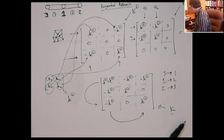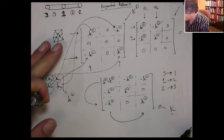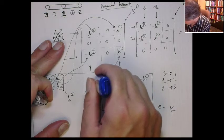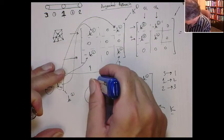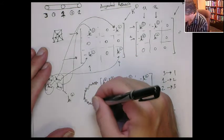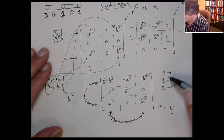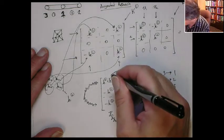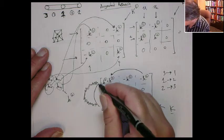All right, let's get back. I could just reverse the arrows: column three goes to column one, and row three goes to row one.